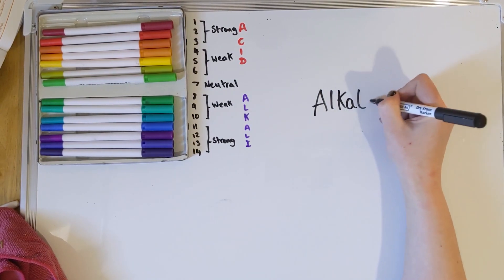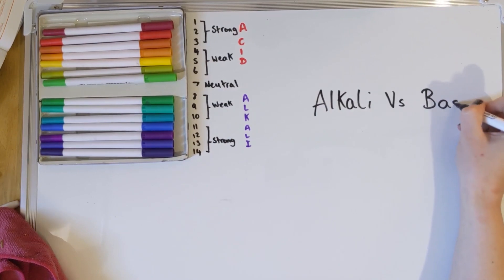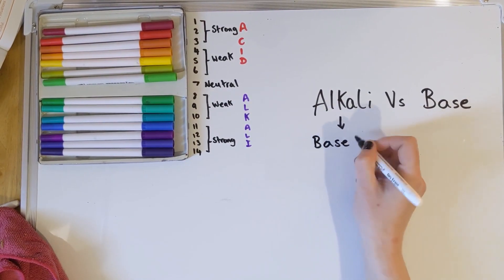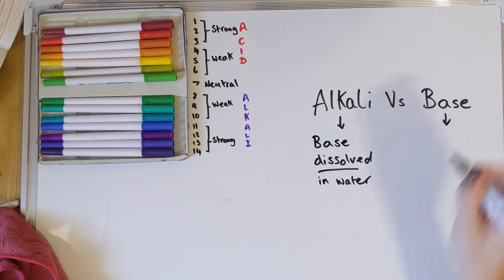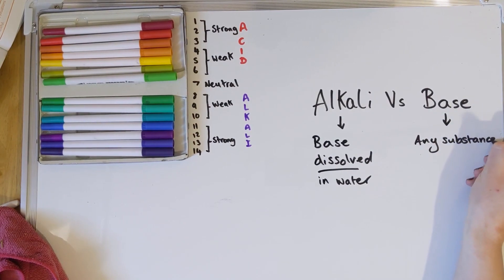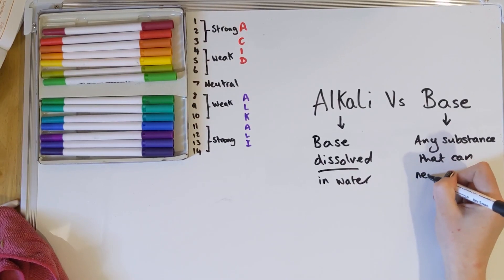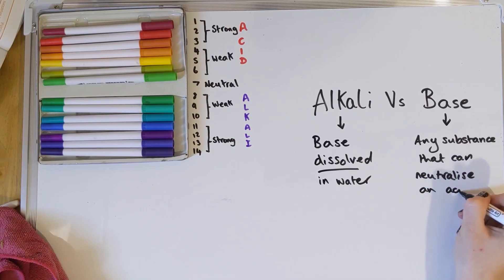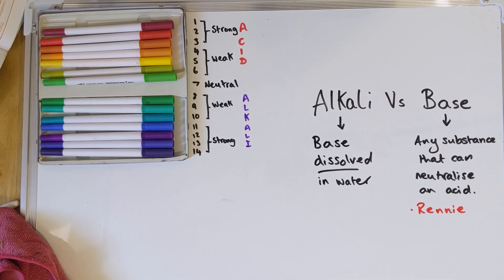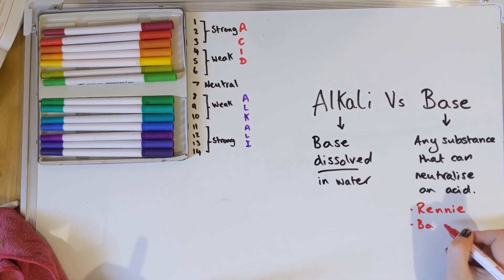The last bit is the difference between something called an alkali and something called a base. An alkali is basically a base that is dissolved in water. A base is any substance that can neutralize an acid — so you can have solids that if put into hydrochloric acid would neutralize it, but it's not necessarily a liquid. You probably have some bases at home, like Rennie tablets — those tablets you take when you've got heartburn — and baking powder is a base as well, which would neutralize an acid.